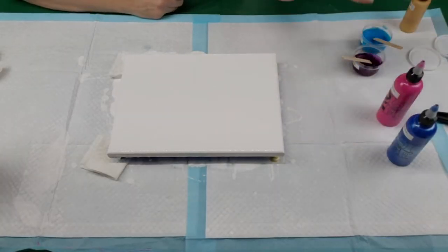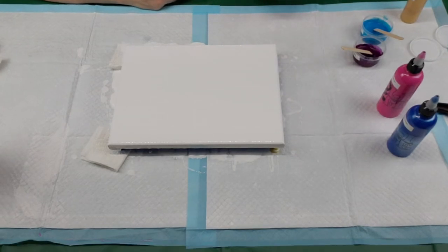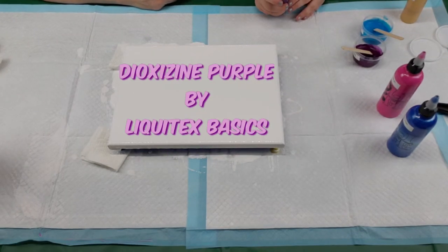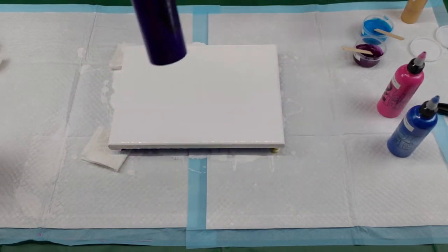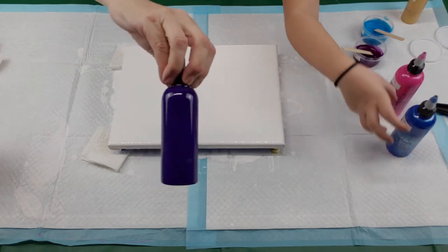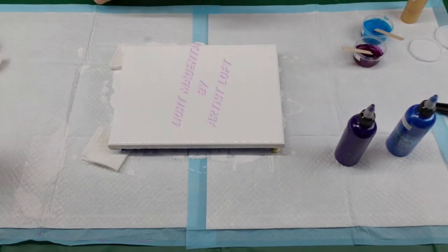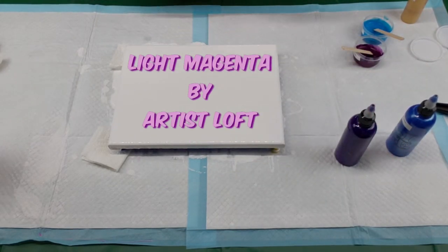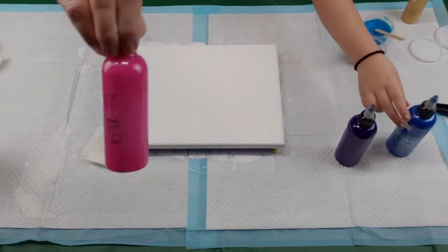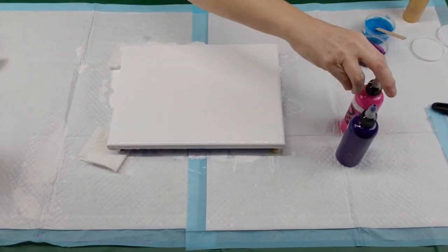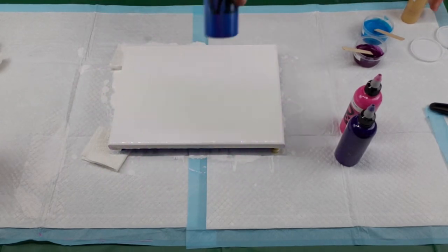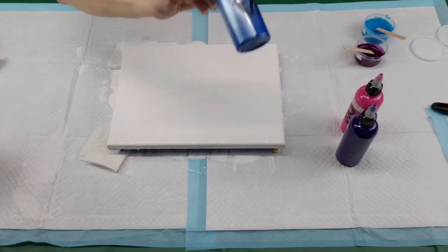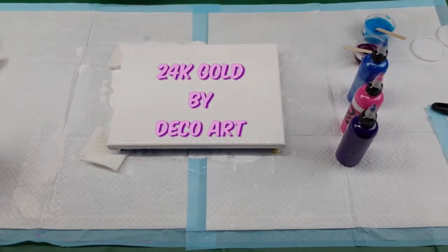Okay, so this is Dioxazine Purple, Liquitex Basics. This is Light Argenta by Art Loft, and there's that, that is Metallic Blue by Artis Loft. And there's metallic in this one, if you can see it. 24K Gold by Deco Art.